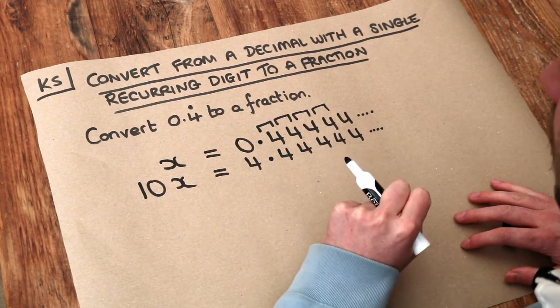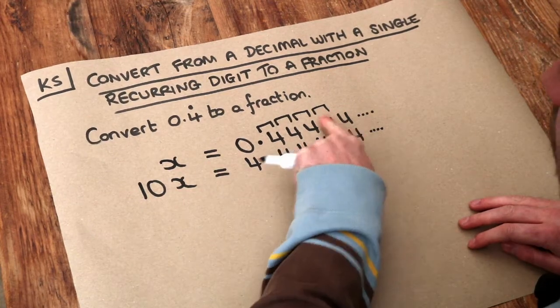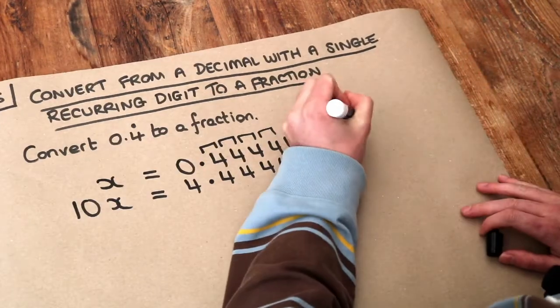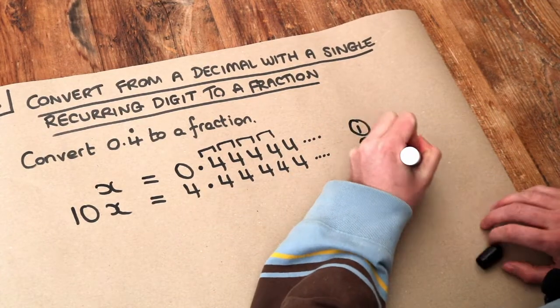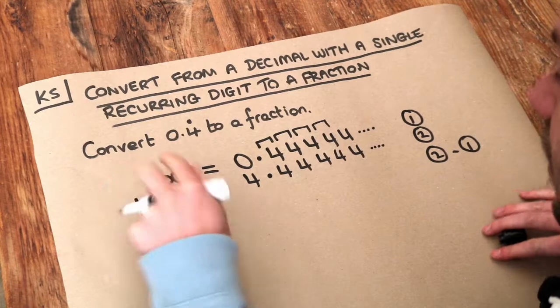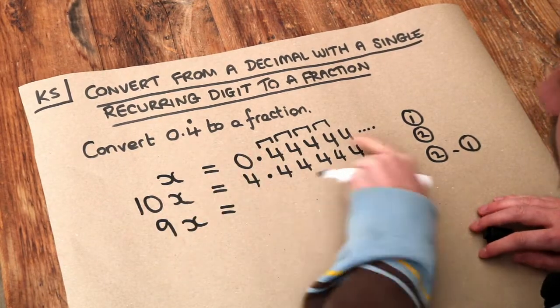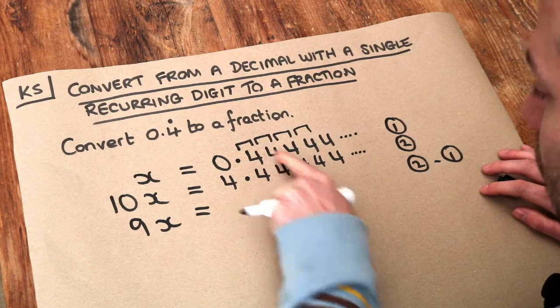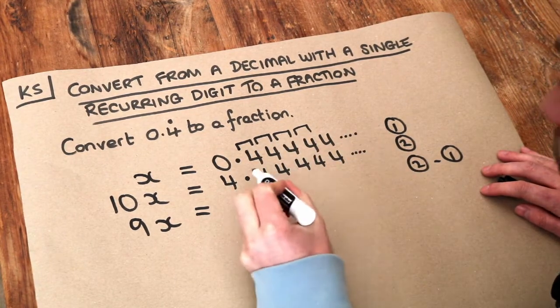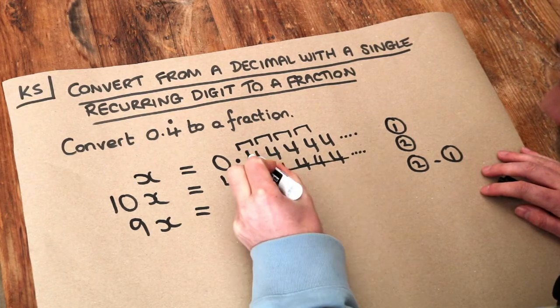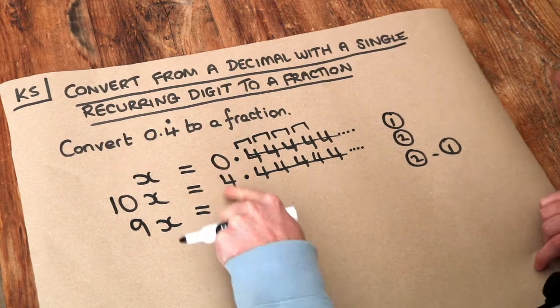Now the next bit is where the magic happens. We just subtract these two equations. We do the second equation subtract the first. If we do 10x minus x, that gives you 9 lots of x. Now if I subtract these, can you see that if we have 4 minus 4, 4 minus 4, 4 minus 4, these are just going to be zeros. So this is going to cancel. And we're just left with 4 minus 0, which is just 4.